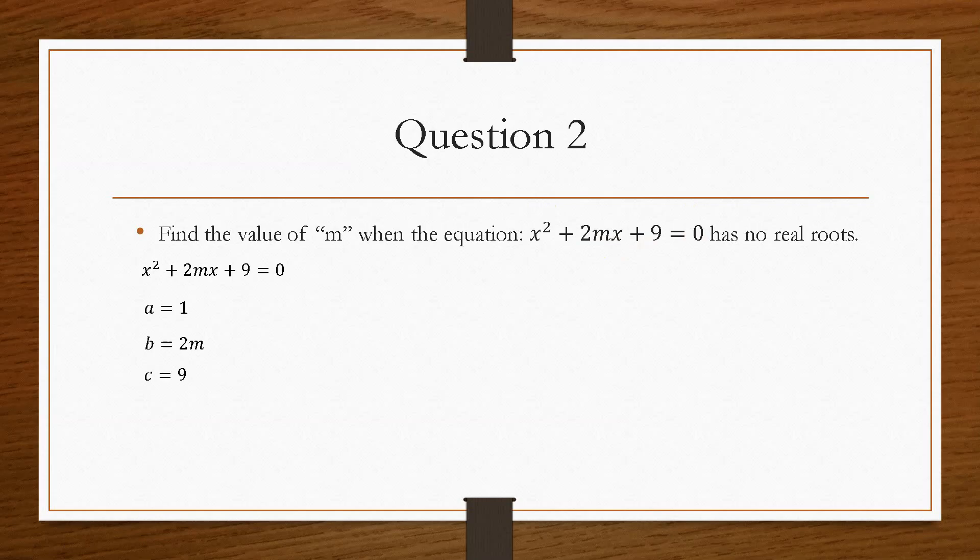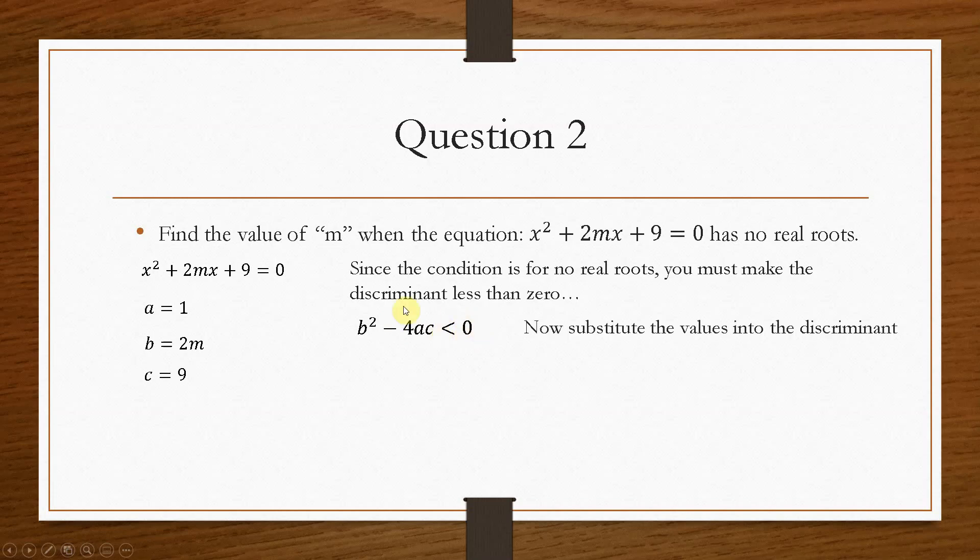So same thing as before, we define what the constants are. So a is 1, b is 2m, and c is 9. So we can't write equal zero here because our condition is that it has no real roots, which means that this value here must be less than zero.